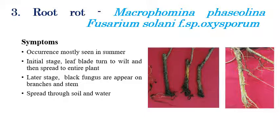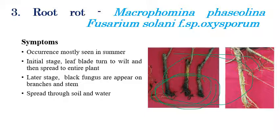Third one is root rot, which is caused by Macrophomina phaseolina or Fusarium solani forma specialis oxysporum. These symptoms can mostly be observed in summer due to high temperatures. At initial stages, wilting of the leaf blade can be seen, and later it spreads to the entire plant. In the stem region, black color discoloration can be clearly observed, indicating growth of the fungus, and development of sclerotia can be seen if you cut open and examine the vascular bundles. This disease can spread through soil and water.